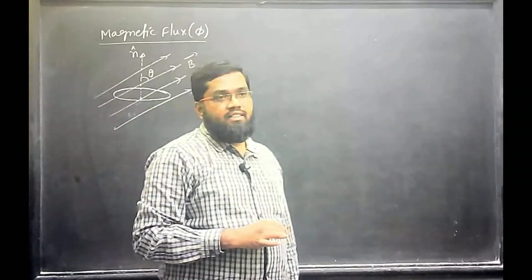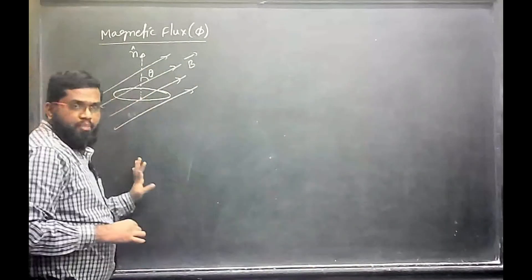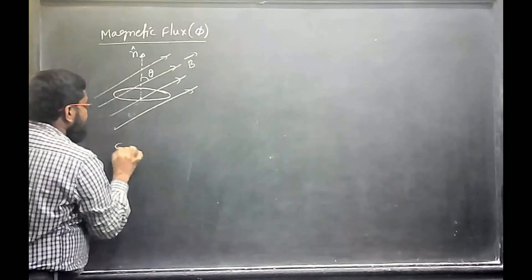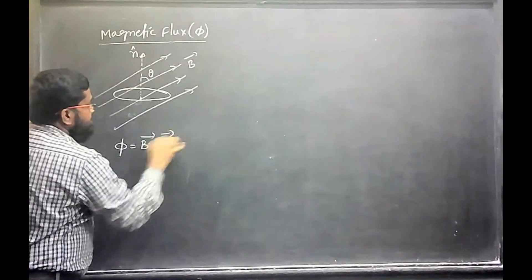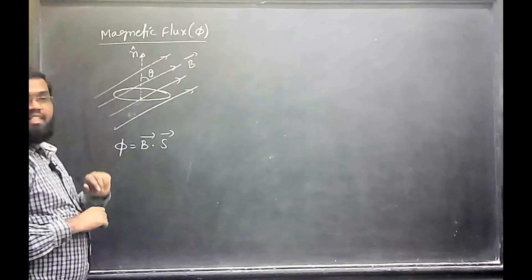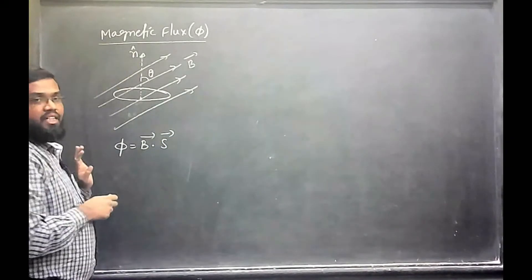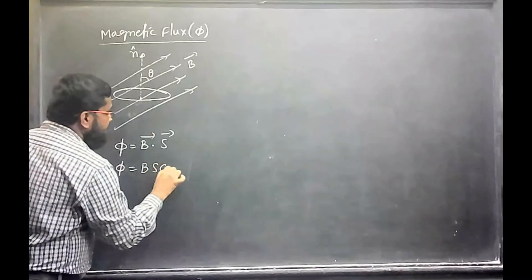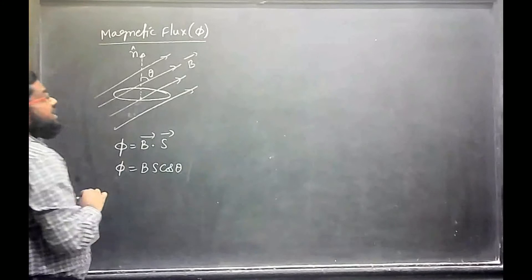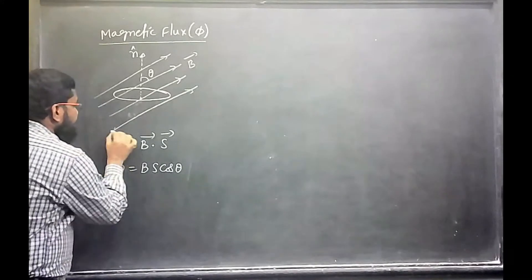Magnetic flux passing through this square loop is defined as scalar product of B dot S. So, B is the magnetic field vector, S is the area vector. The plane normal itself is the direction it indicates. It is simply written as magnitude of B, magnitude of area into cos of theta. So, theta is the angle between magnetic field and normal. This is for uniform cases.